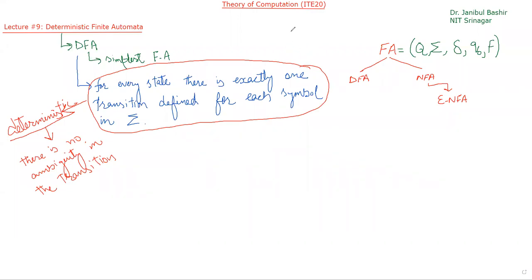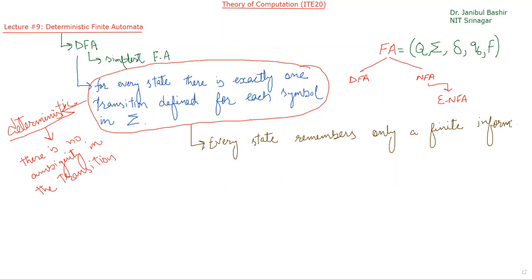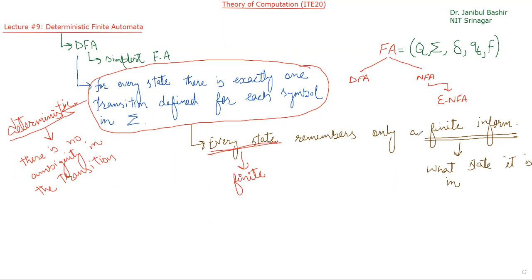Another feature of the DFA is that every state remembers only finite information — specifically, the current state. Since there are finitely many states and each stores finite information, the overall information stored by a DFA is finite. It cannot store infinite information.